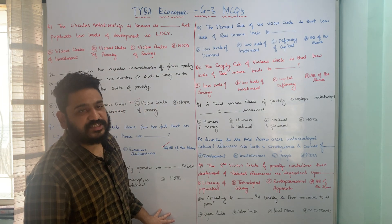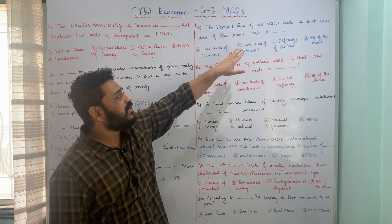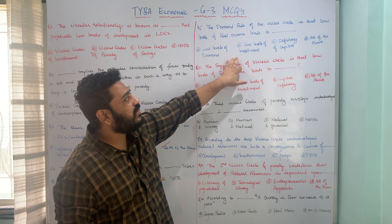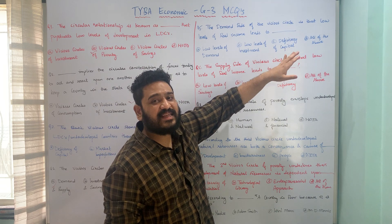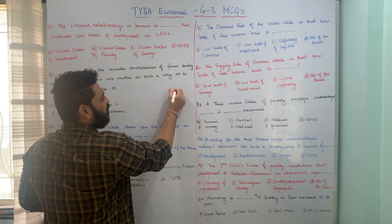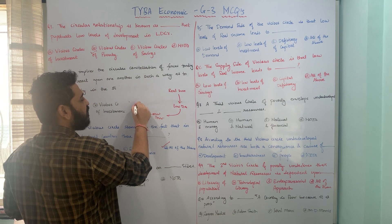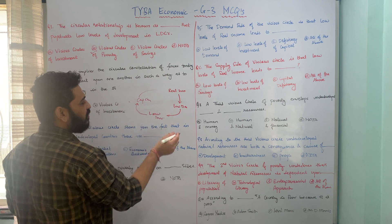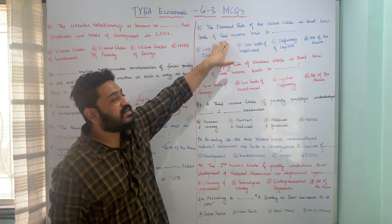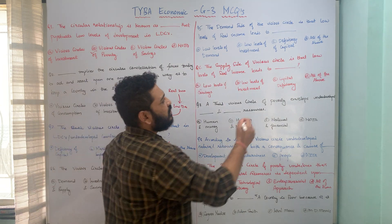The next question is specifically about the demand side of the vicious circle. The demand side of the vicious circle is that low levels of real income leads to dash. Options: A — low levels of demand; B — low levels of investment; C — deficiency of capital; D — all of the above. Real income is low, which leads to low demand, which leads to low investment, which leads to capital deficiency — completing the entire circle. All of the above is the correct answer.